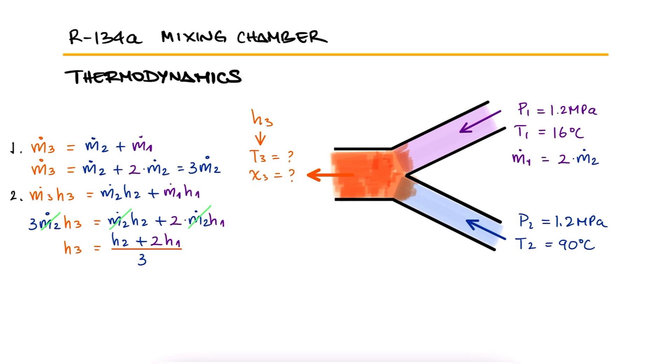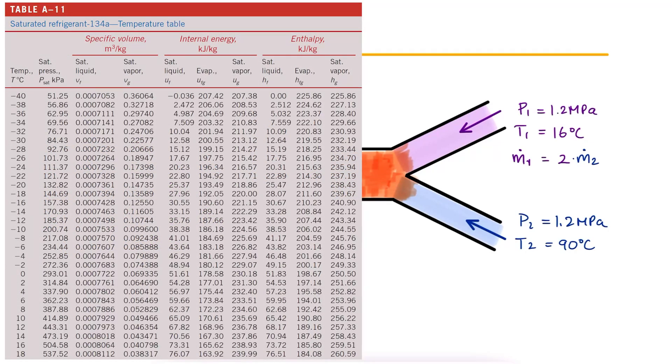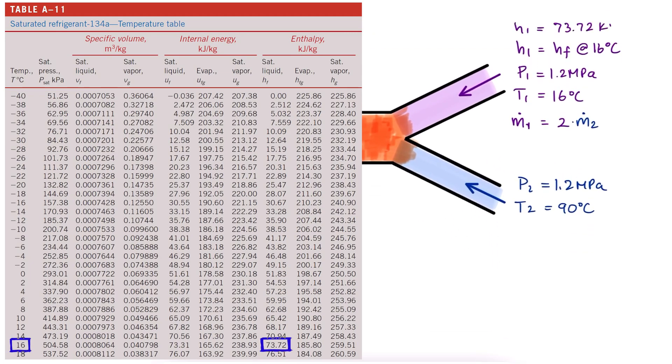For inlet 1, we go to our saturated tables by temperature and notice that for 16 degrees Celsius, the saturation pressure is 504 kPa. Since our pressure is 1.2 MPa, inlet 1 is a compressed liquid and we can take HF at 16 degrees Celsius as our H1 value.